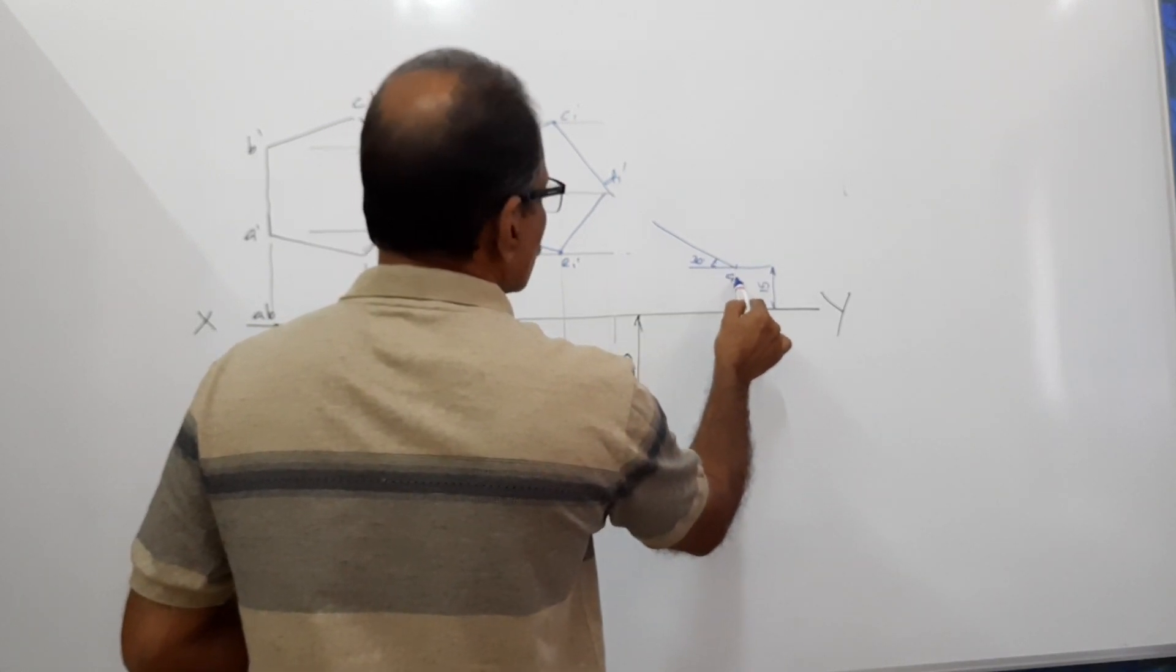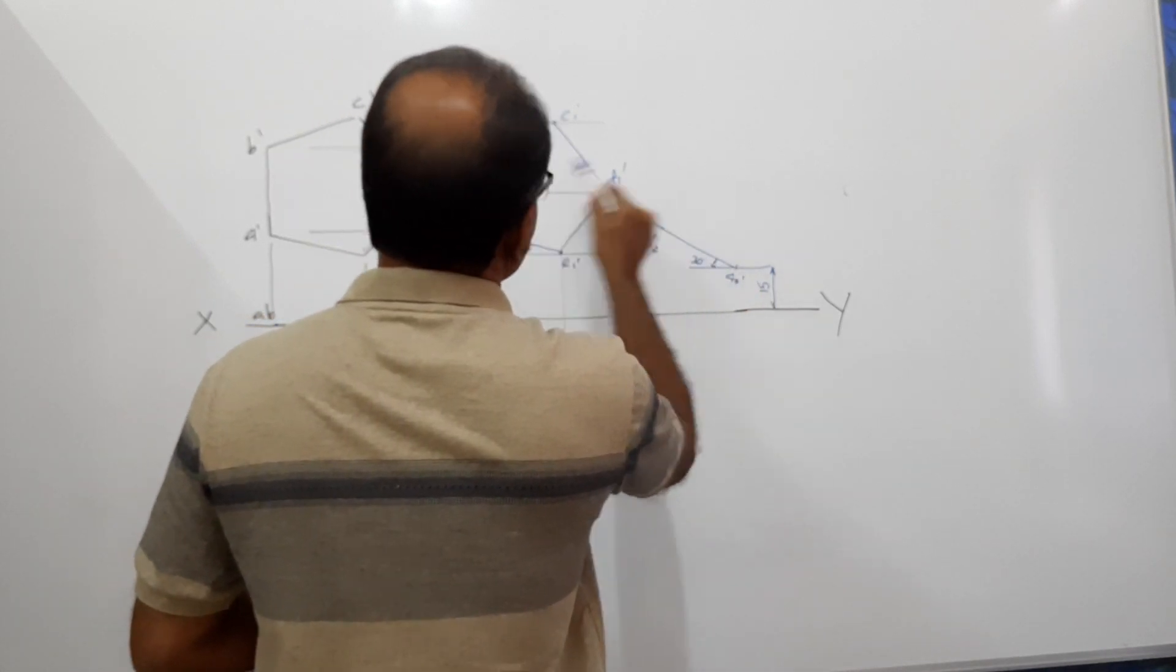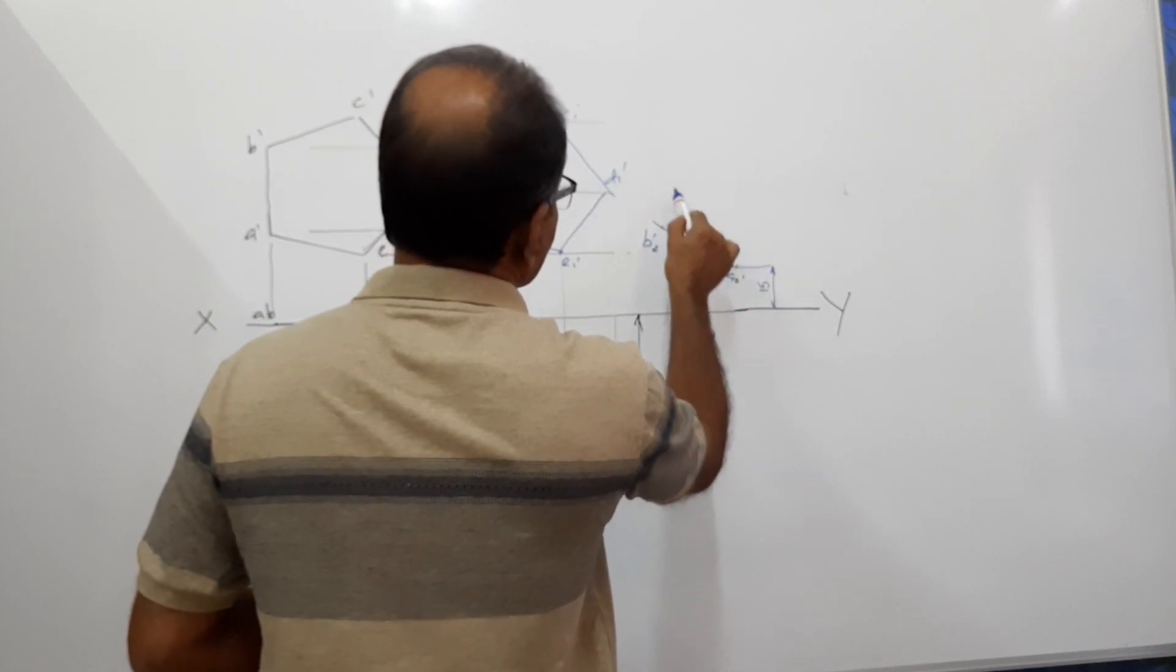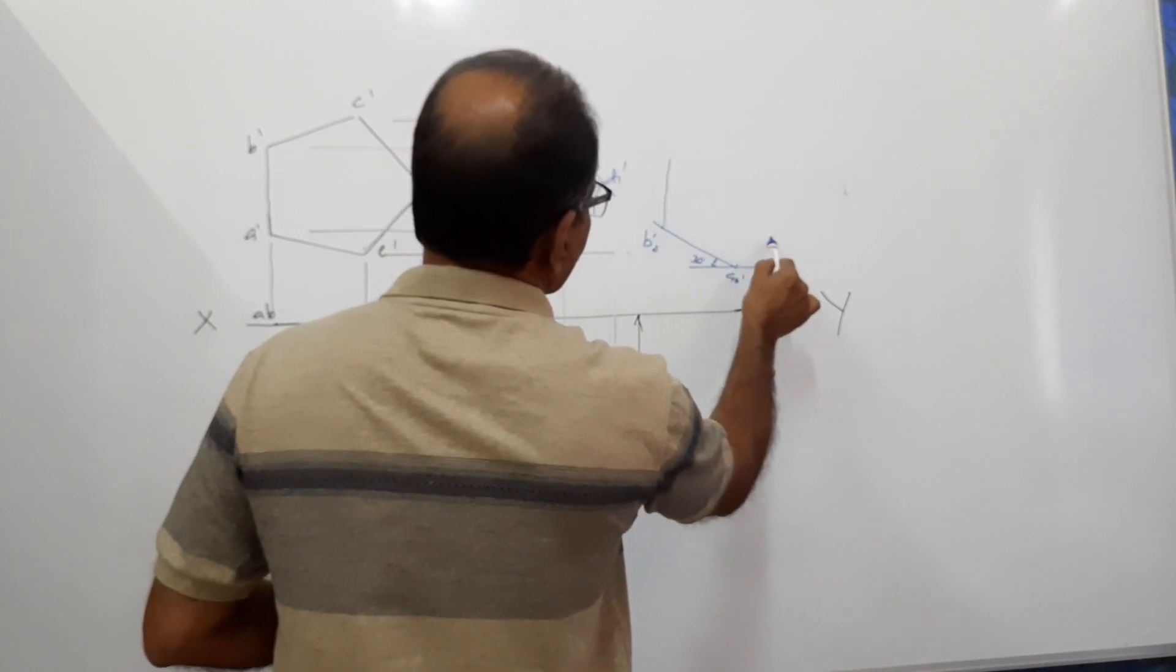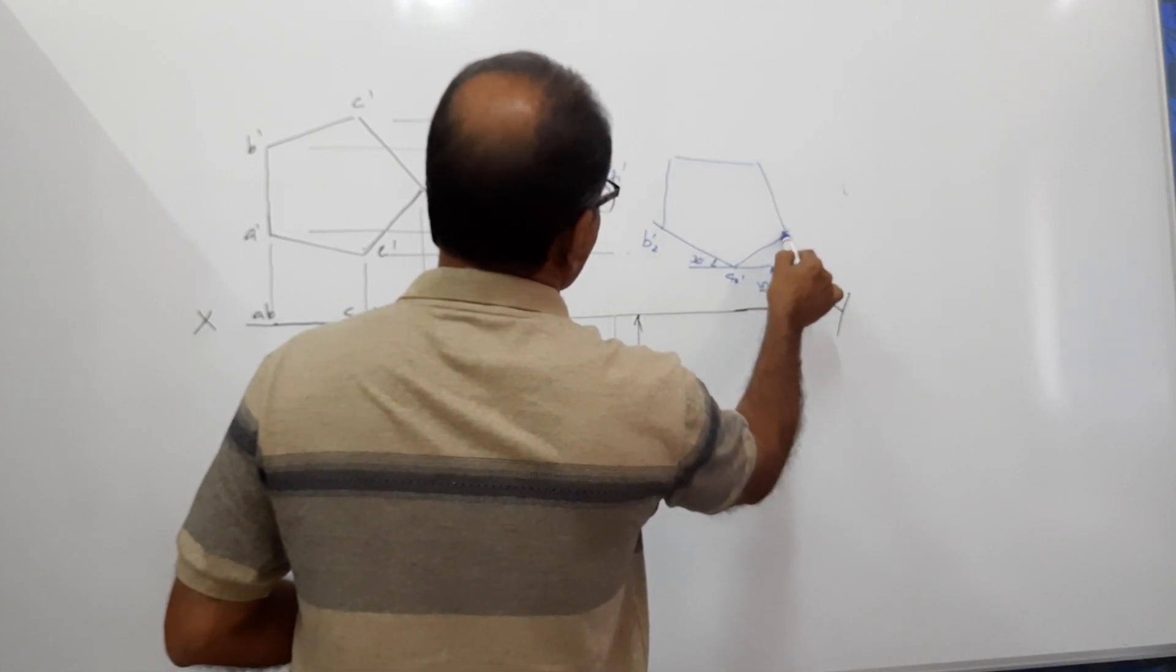This is E2 dash. Take this distance and mark to get B2 dash. And complete this pentagon, manage to complete this pentagon.